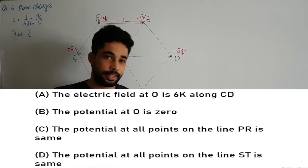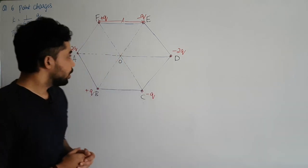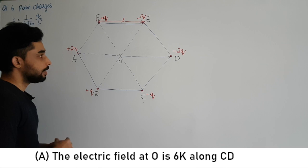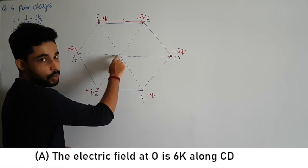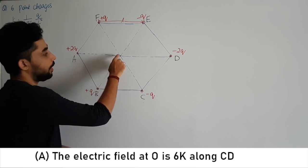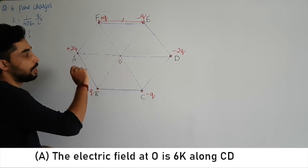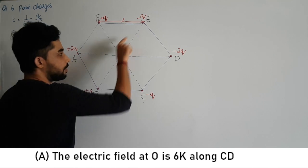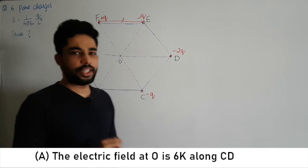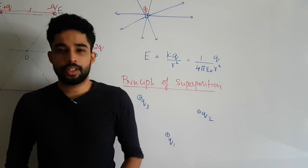Let's look at the first statement. It says the electric field at point O is 6k and it is along CD. Let's verify whether this is true or not.